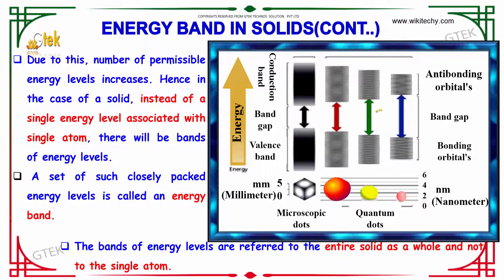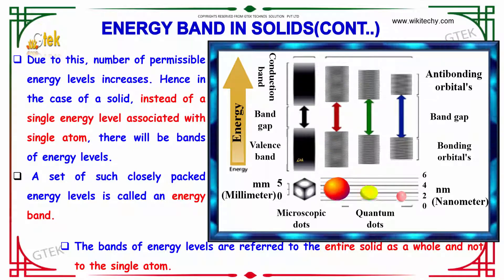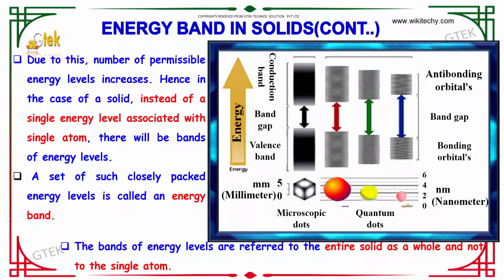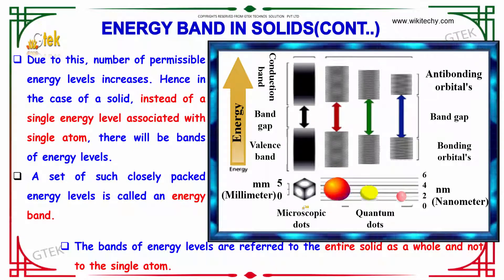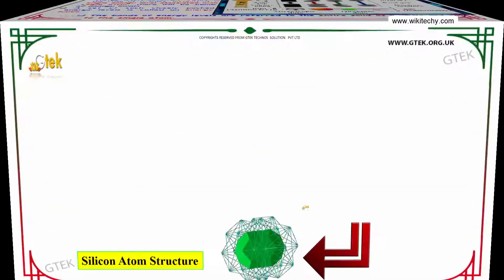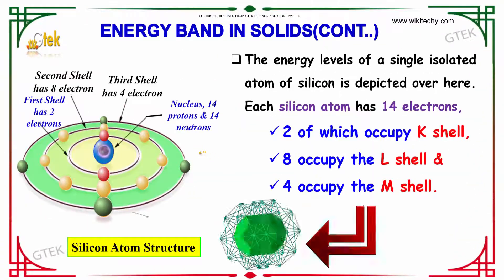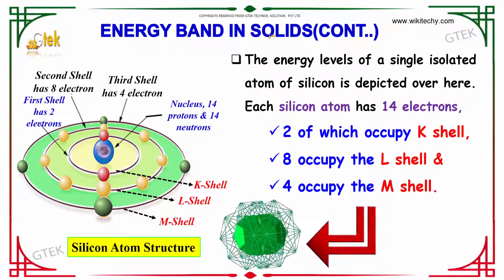You are able to see the energy band for the relative items. Based on the size, the energy bands are classified. Now, let's talk about the energy bands in a solid. The energy levels of a single isolated atom of silicon is depicted here.